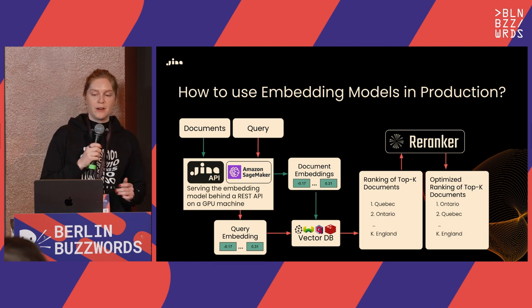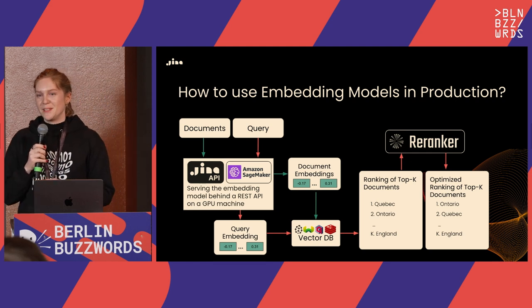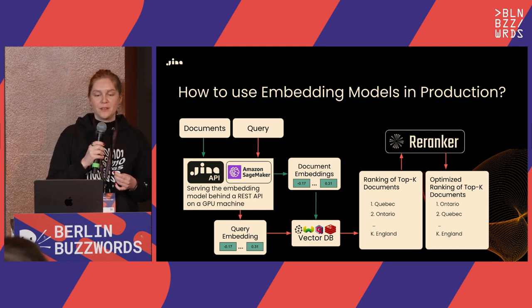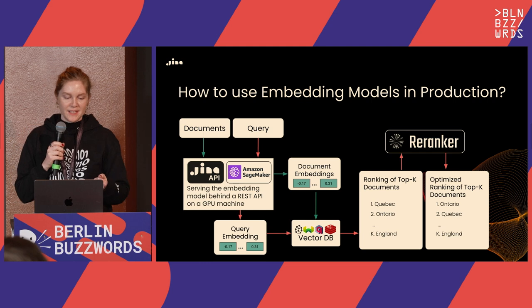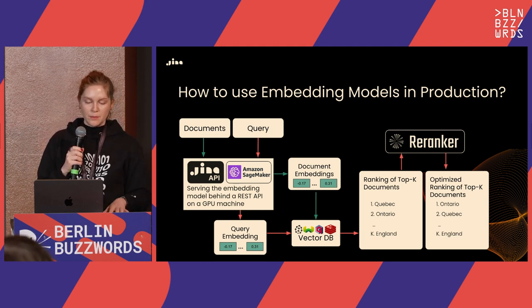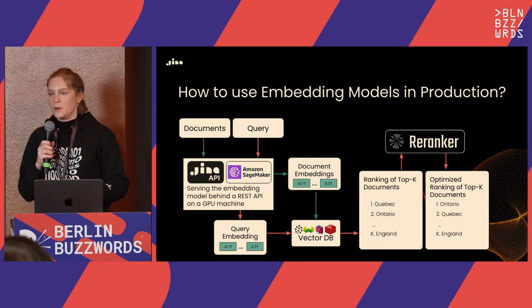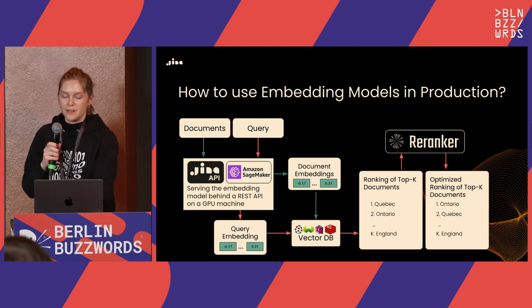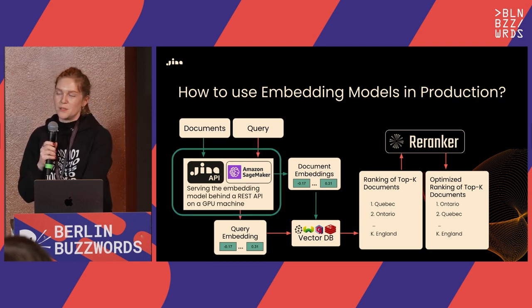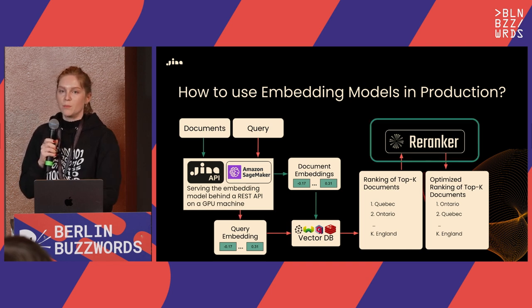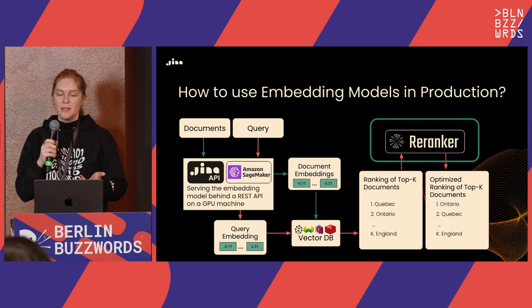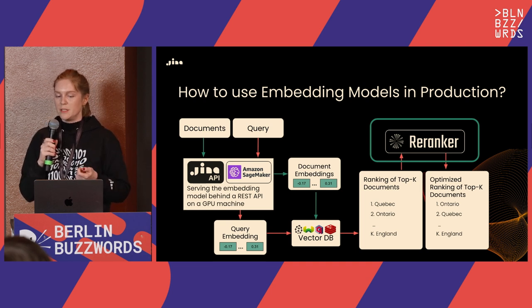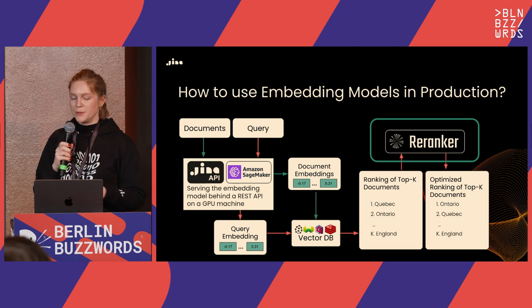For production use, you can use the Gina API to send documents for encoding, or deploy our models on Amazon SageMaker. To get extra-good results, you can also use a re-ranker — a cross-encoder model that's more specialized and slightly slower than an embedding model, but performs excellent re-ranking by detecting semantic similarity between queries and documents. Our re-ranker model is also available via our API.